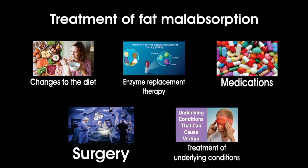Medications: in some cases, medications may be prescribed to help with fat digestion and absorption, such as Orlistat, which blocks the absorption of dietary fats. Surgery: in some cases, surgery may be necessary to correct underlying structural abnormalities, such as a blocked bile duct or a shortened small intestine. Treatment of underlying conditions: treating the underlying condition that is causing fat malabsorption, such as celiac disease or Crohn's disease, may help improve the absorption of fats.